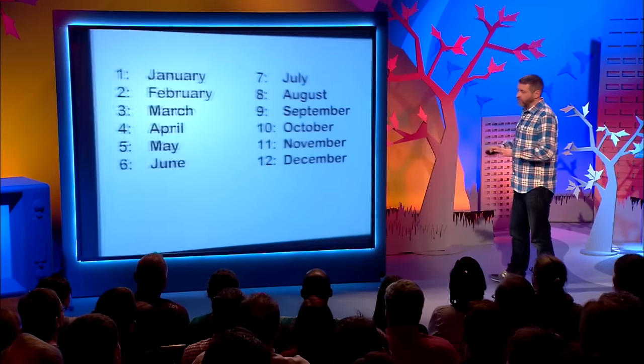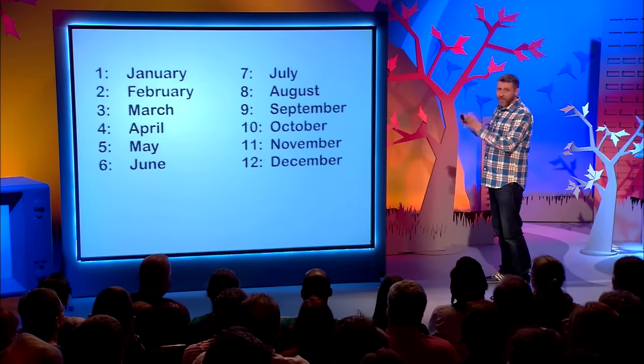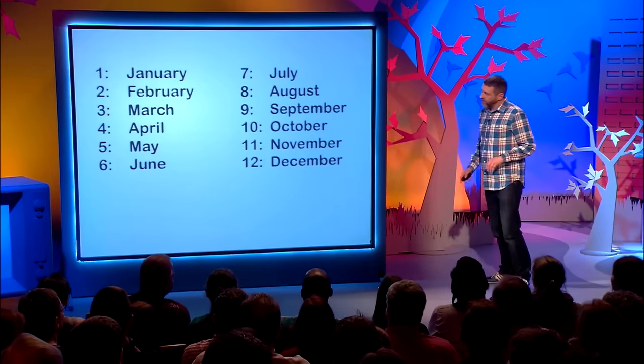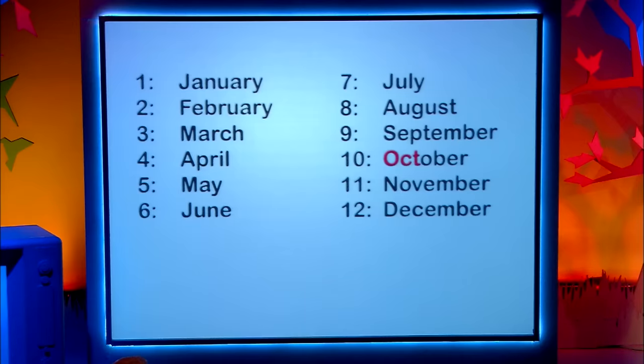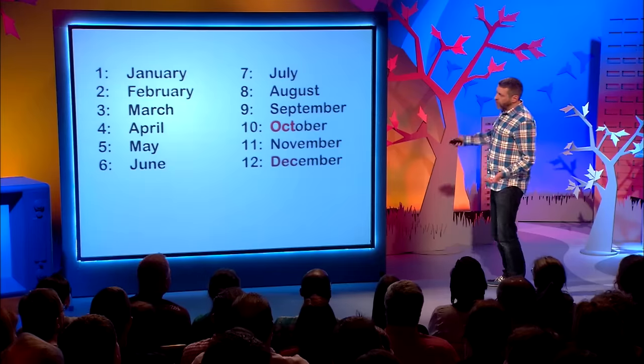These are the months as we know them today. Take a look at the word October — 'Oct.' Think of all the other words beginning with 'oct': octopus, octagon, octogenarian. Think of all the words beginning with 'dec': decade, decimal, decathlon.